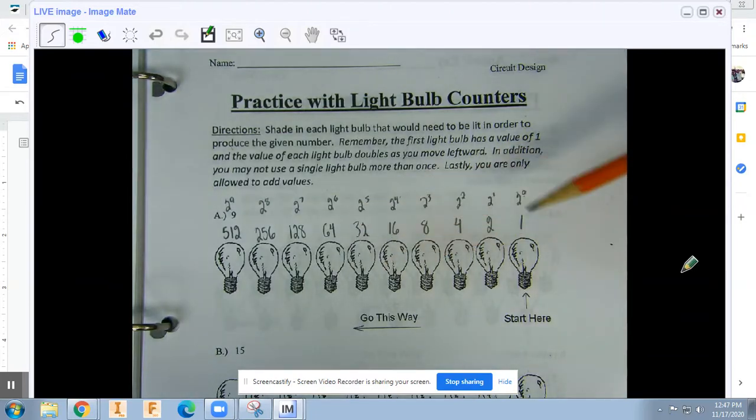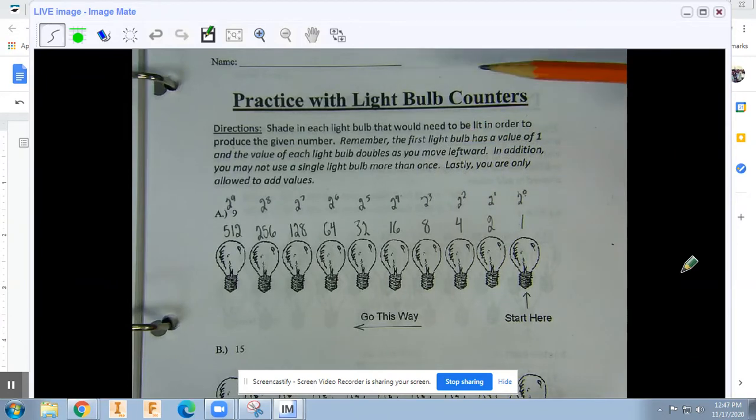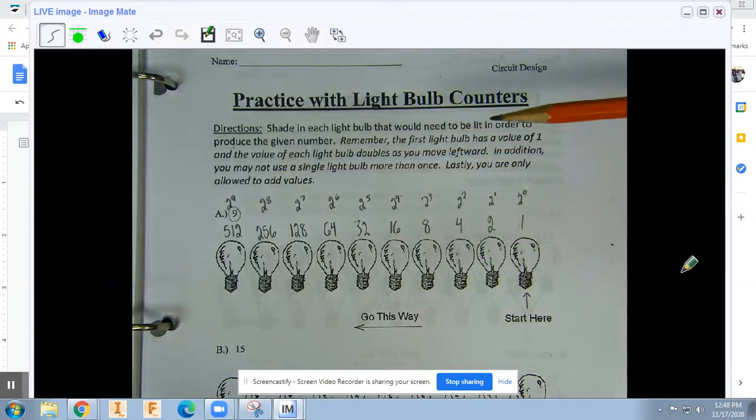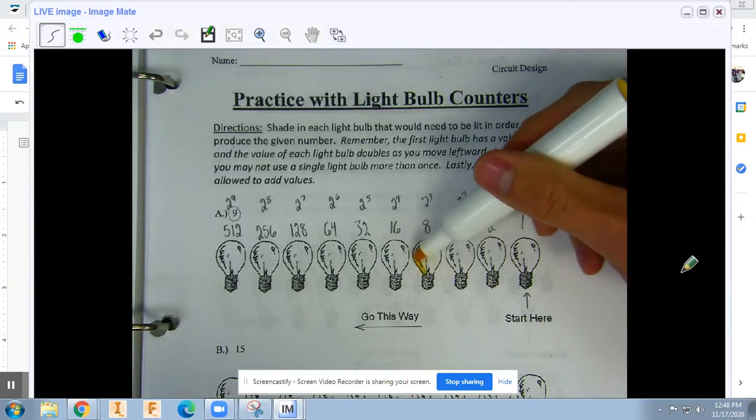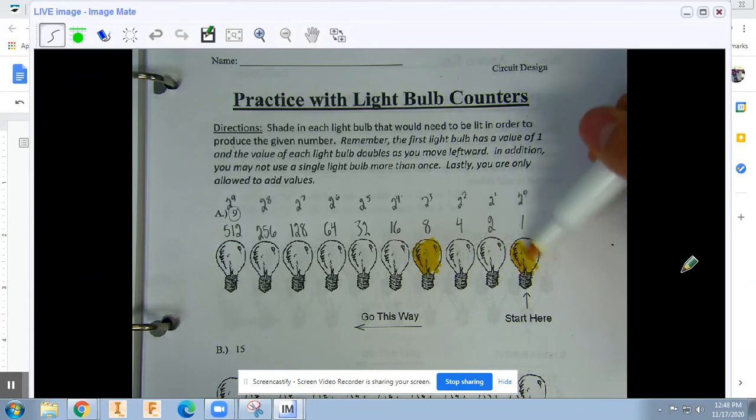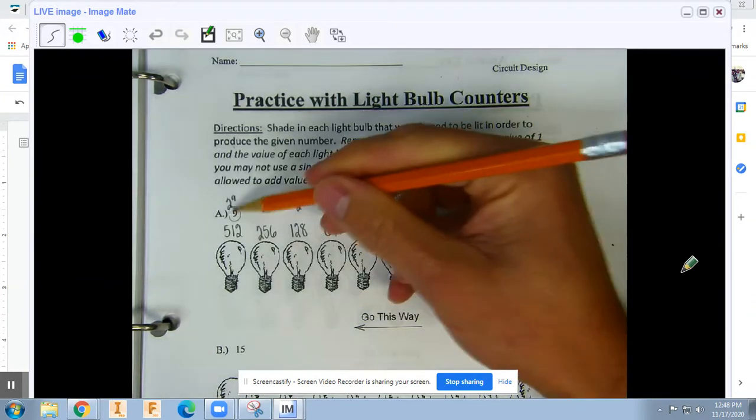The way binary works is that we will add up any of these numbers and it will be able to produce any number. So if the number we're trying to make is 9, there's only one possible combination of numbers that gives us that. It is 8 plus 1. So shade in 8 and 1. You can use a pencil. I just happen to have a yellow marker.